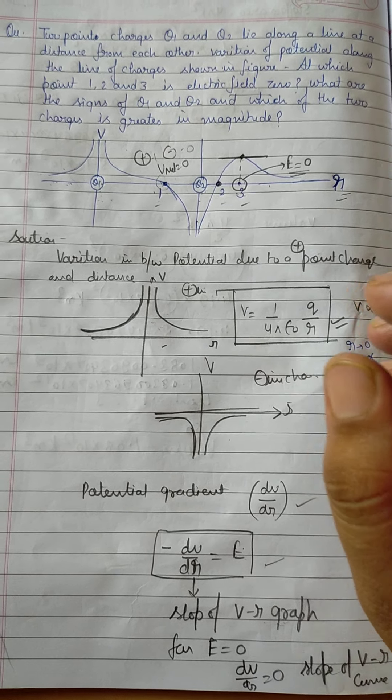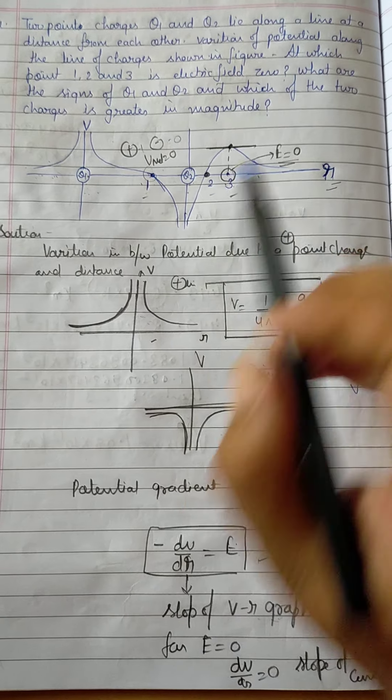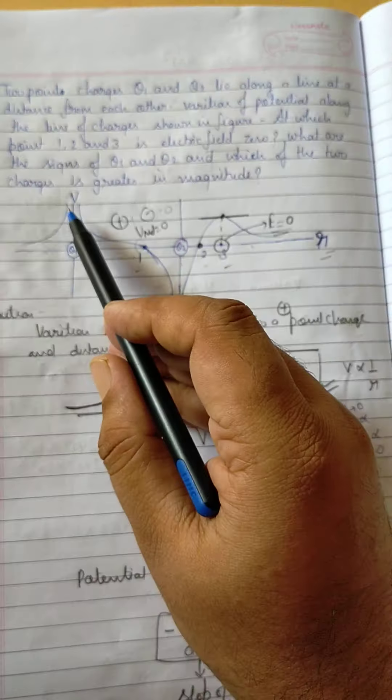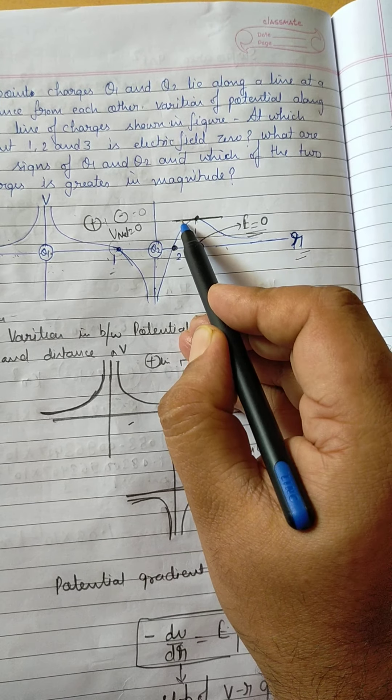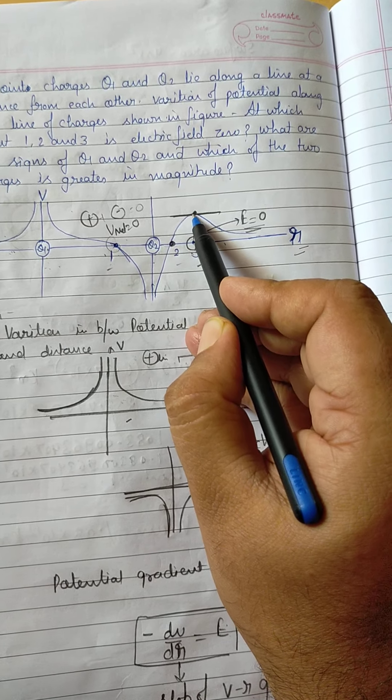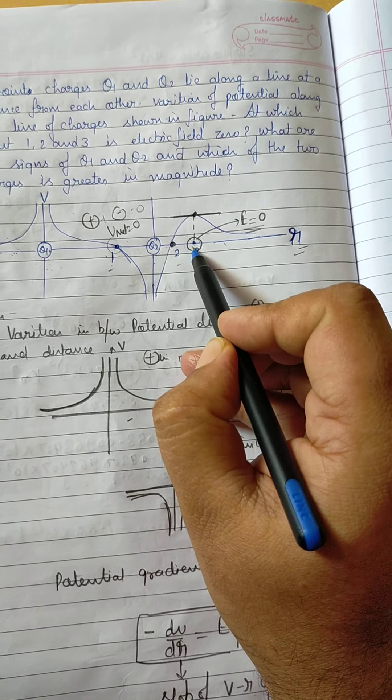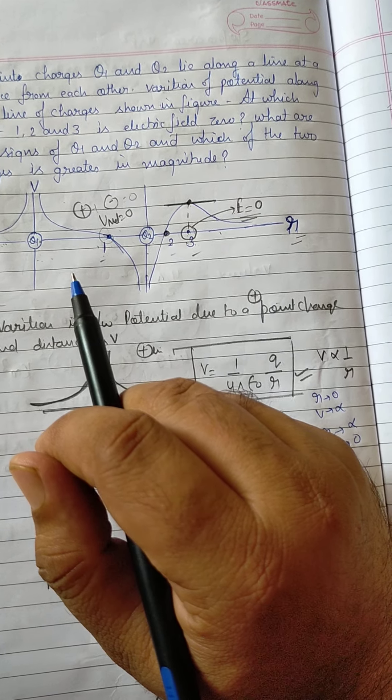It means slope of the curve is equal to 0. And when the slope of any curve is equal to 0, then it means the curve is parallel at that point, parallel to x-axis. So in this whole curve, there is only single point at this—if we draw a tangent on this point, then this tangent is parallel to x-axis. So it means at this point the value of E is equal to 0.